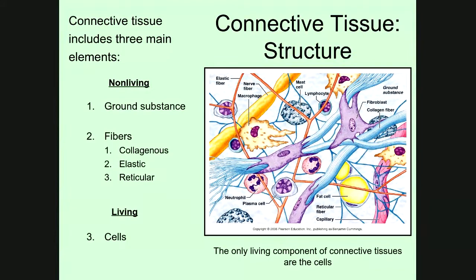In our last video, we started to talk about tissues in the body. There are four main tissue types: epithelial tissues, which we've looked at, muscle tissue, nervous tissue, and the fourth main category we're going to talk about today is connective tissue. This is one of the most common types of tissue in the body, and you find it anywhere that body parts need to be connected together.